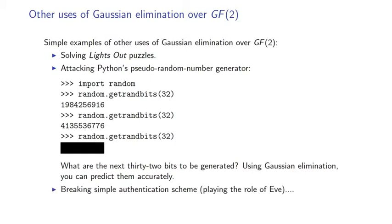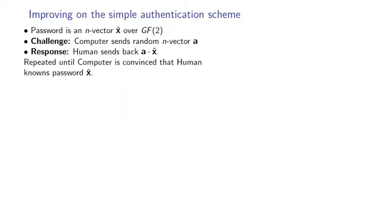Here's another application: breaking the simple authentication scheme. You'll recall that the simple authentication scheme works like this. The password is an n vector, x hat, over GF2, known only to the computer and the human. The computer authenticates the human by sending challenges that the human has to reply to.